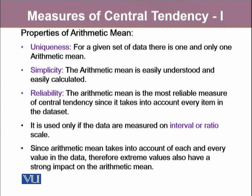Arithmetic mean has multiple properties. The first one is its uniqueness. Because for the given data set, there is only one and only one arithmetic mean. Arithmetic mean is easily understood and easily calculated. That's why it's one of the most common measure of central tendency. The arithmetic mean is the most reliable measure of central tendency since it takes into account every item in the data set. It is used only if the data are measured on interval or ratio scale.